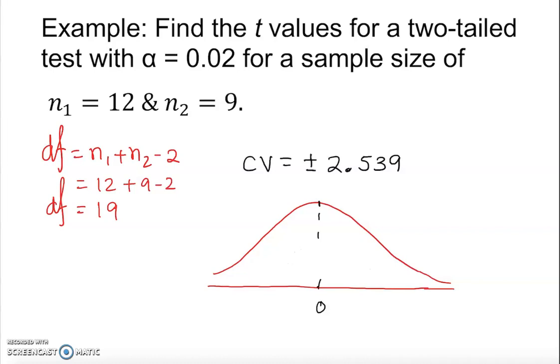So this is 2.539, it should be down here. So that's my critical value, 2.539, and on the left side, that should be my critical value as well. So that is negative 2.539.